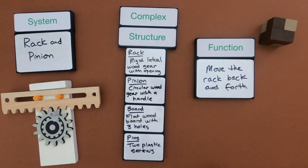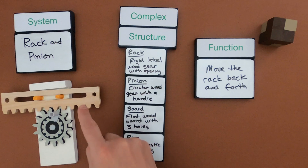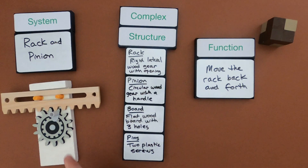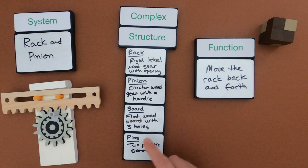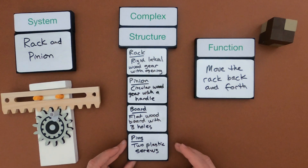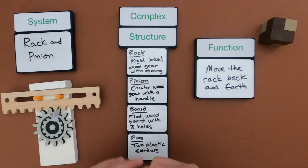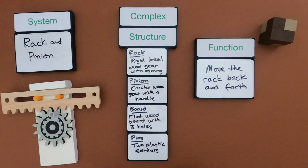Now I've defined all the parts of the complex structure. The rack is a rigid lateral wood gear with an opening in the middle. We've got the circular wood gear with a handle, a flat wood board with three holes, and the pins are two plastic screws. Not only what is the shape but what is the material. Next I'm going to organize these to start seeing how they all interact to create the function.